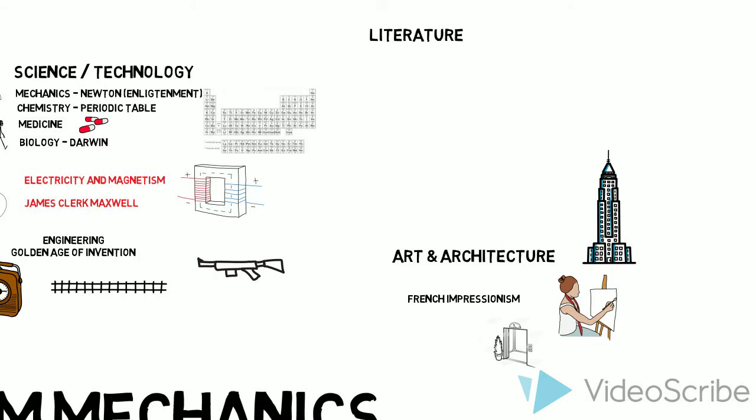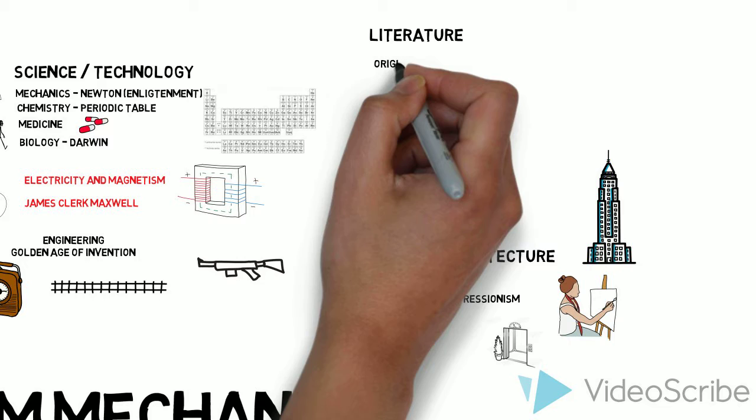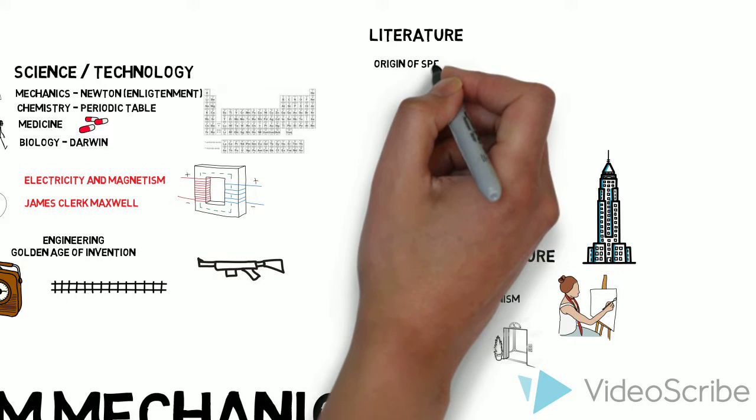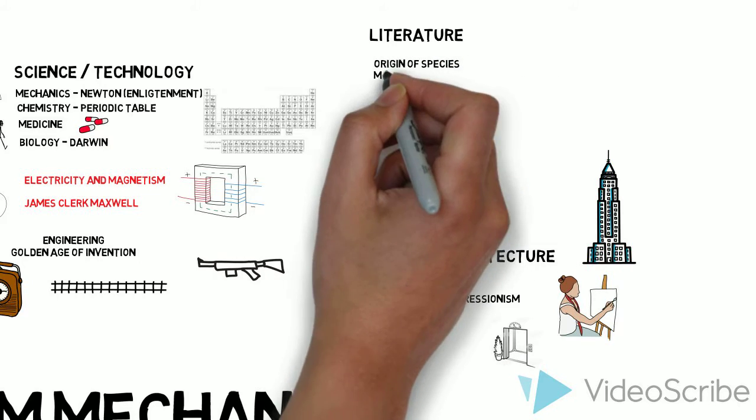In literature, big hitters included the origin of species, Marx's philosophies on society, and Freud's theories on human behavior.